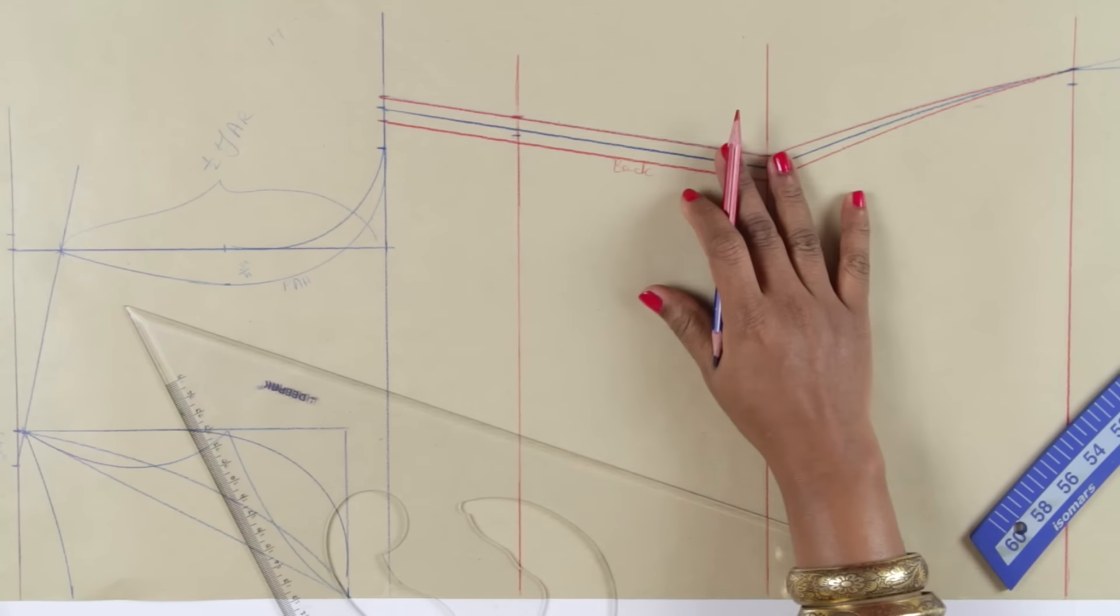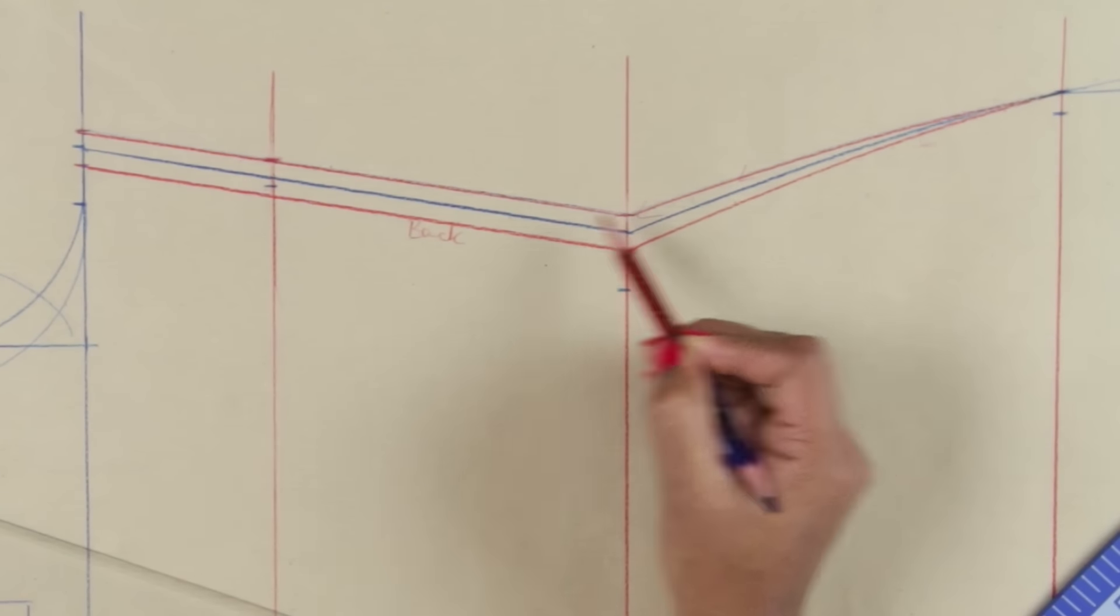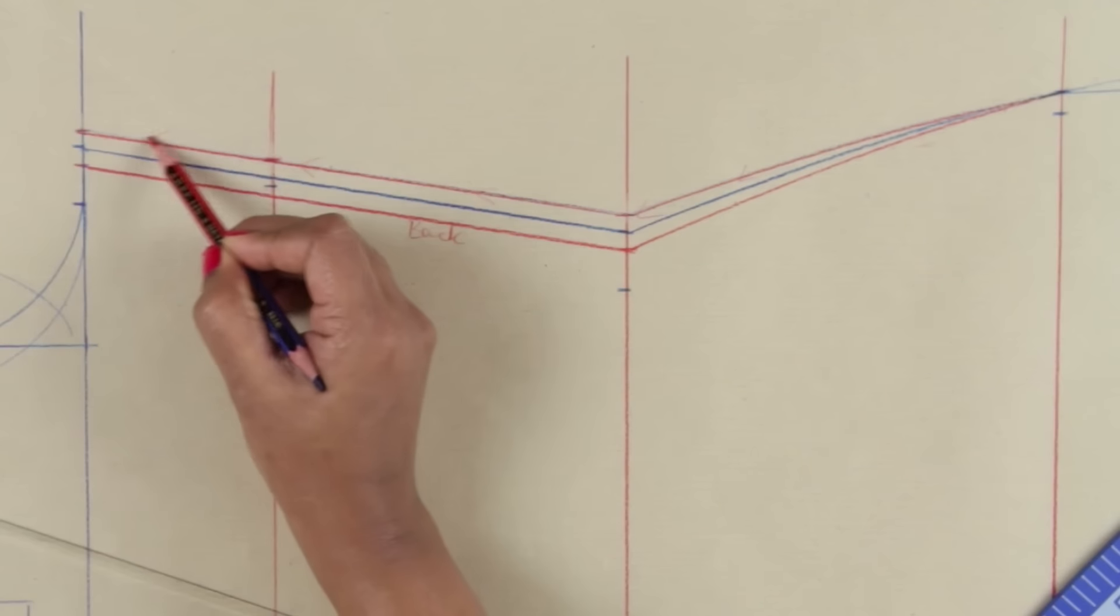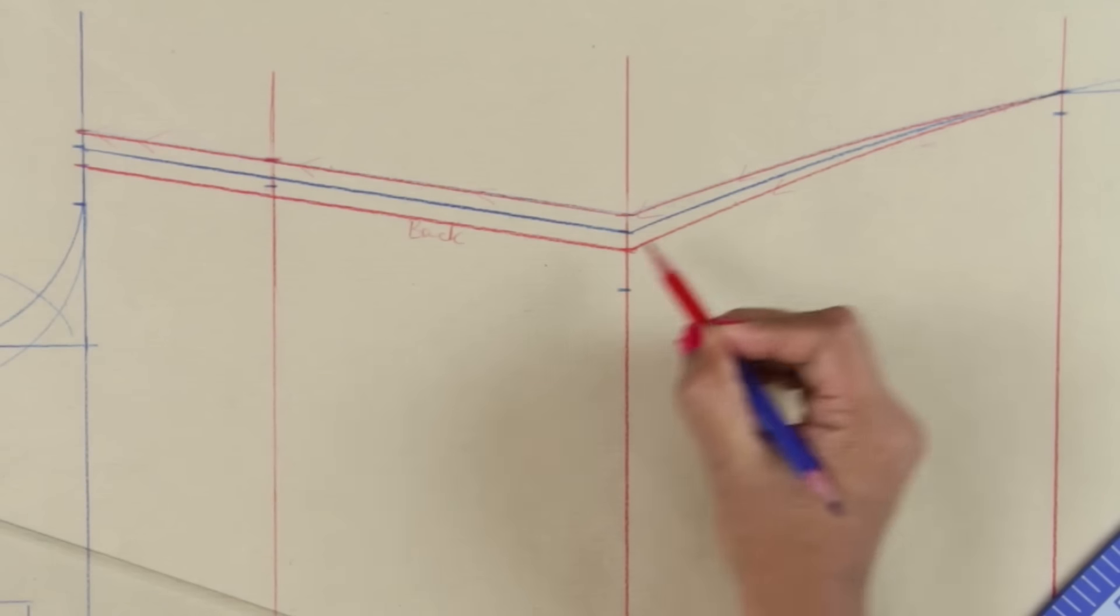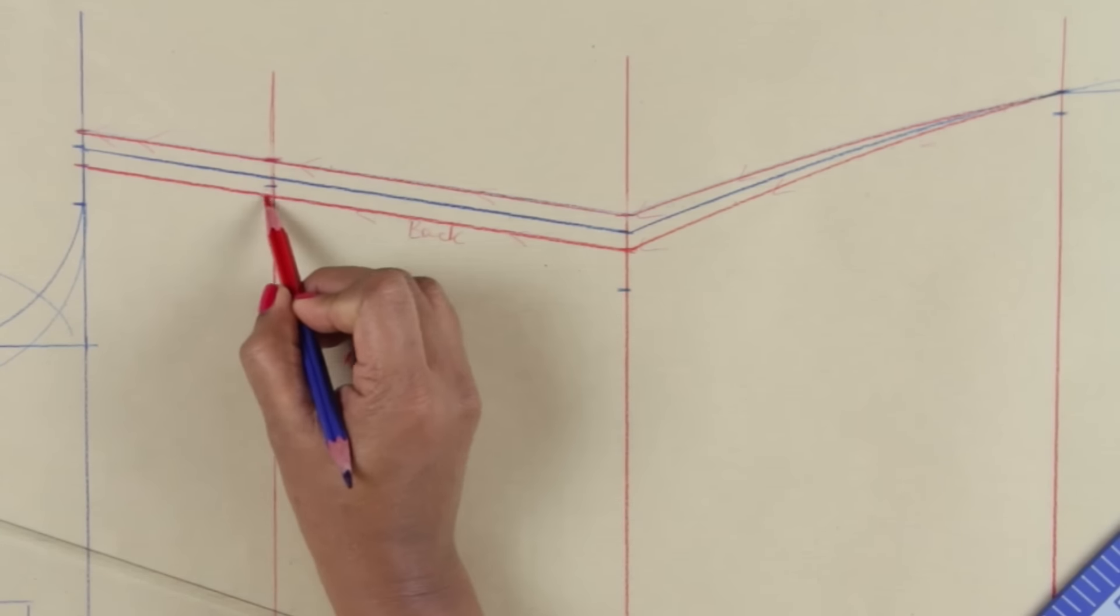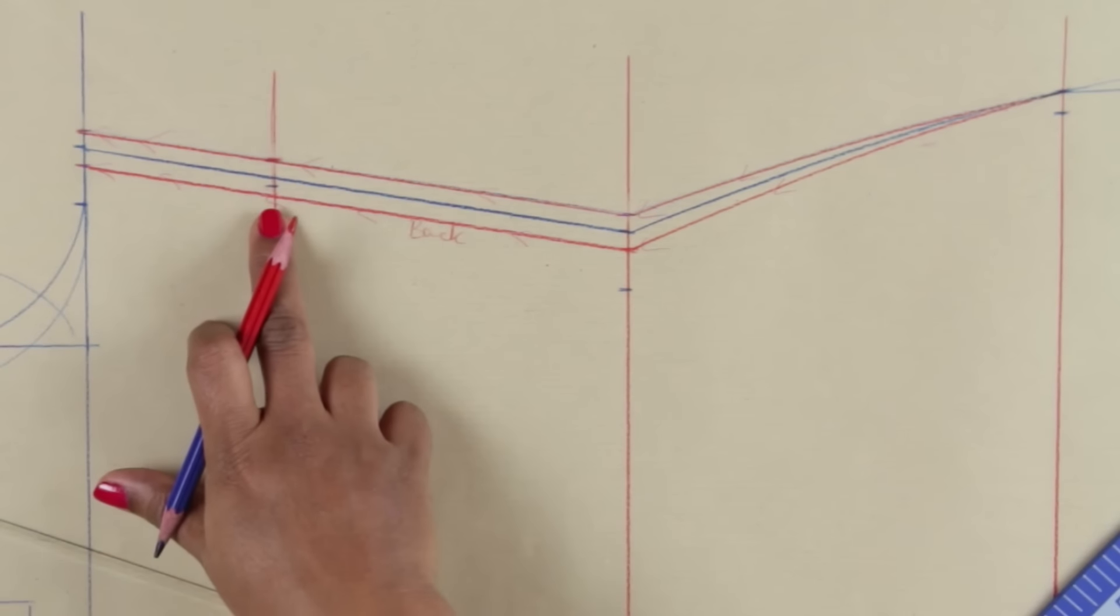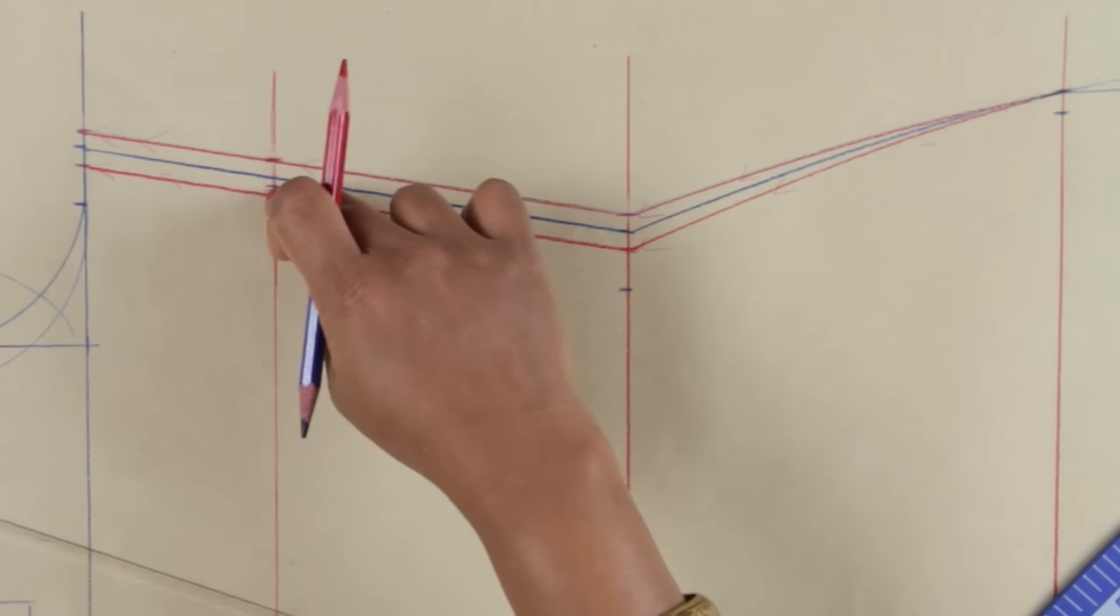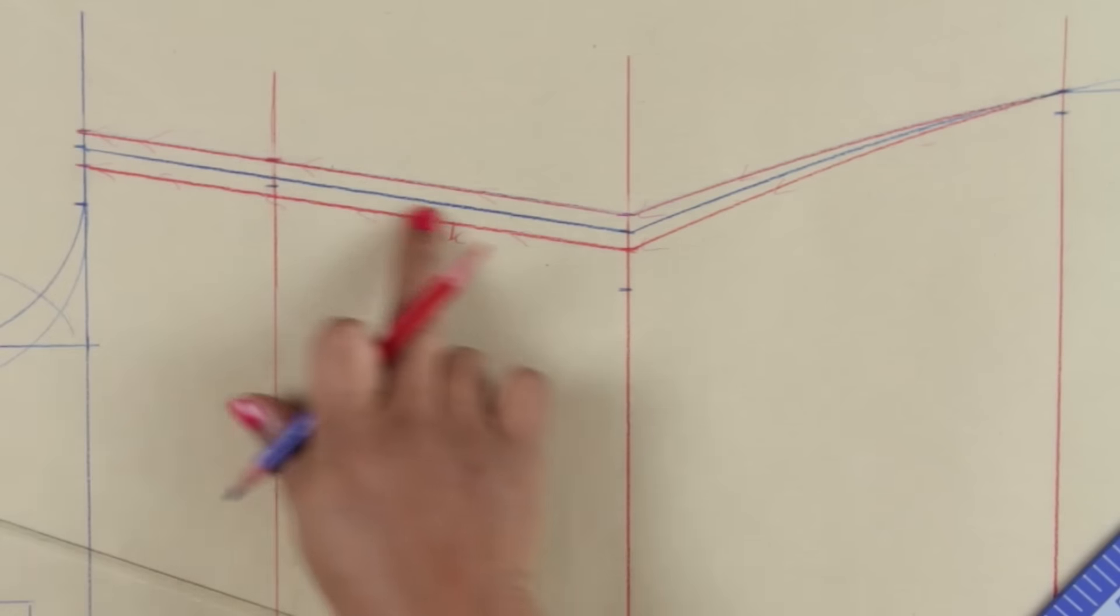So while cutting the fabric, you will cut the front as per the outermost line. And while cutting the back, you will follow the inner line as I am showing here. There is a change you would need to make only if your bust point ease line is beyond the seam line.